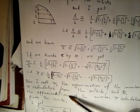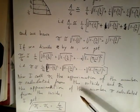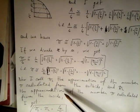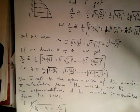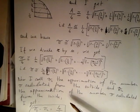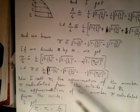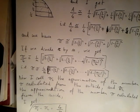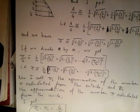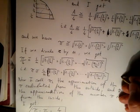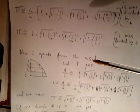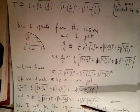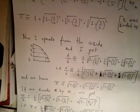Now I call pi 1 the approximation of the number pi calculated from the outside, which I did in the previous videos, and pi 2 the approximation of the number pi calculated from the inside, as I did. Pi 2 is exactly this one here, and pi 1 is this one here. I do the difference between this and this.